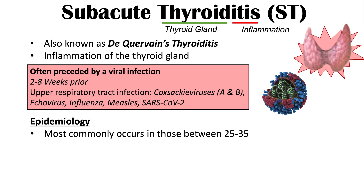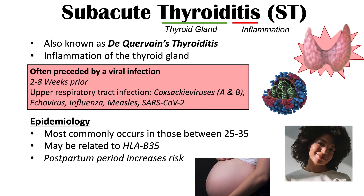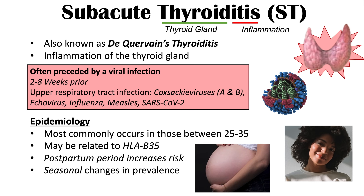This condition most commonly occurs between the ages of 25 to 35 years. The reason it occurs in some individuals is not entirely known, but it may be related to human leukocyte antigen B35. There's also an increased likelihood of having this in the postpartum period. And there seems to be seasonal changes in prevalence, because there are seasonal changes in the prevalence of the viruses we talked about.